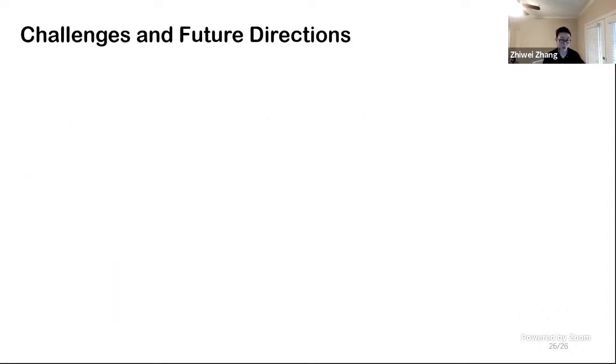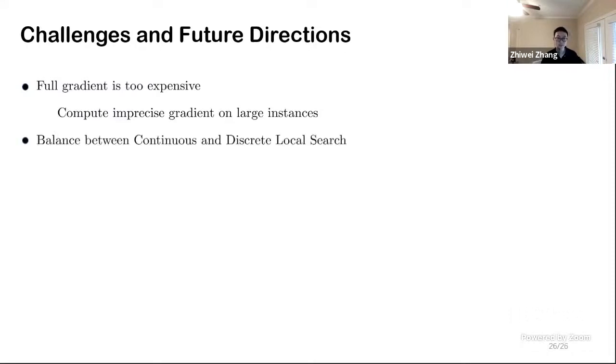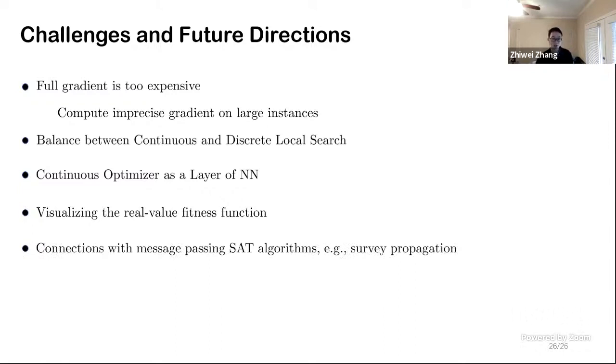As for challenges and the future directions, first of all, the full gradient is really expensive on industrial benchmarks, so we want to compute imprecise gradients. Second, we also want to learn from discrete research to combine that with our framework to design a solver with better performance. Third, since the neural symbolic approach is really popular now, our solver exhibits good potential of being as a layer of neural network as a differentiable optimizer. Also, we want to visualize the real value fitness function to see if we can find any insights of different logical formulas. We also want to connect our algorithm with some random message passing algorithms like survey propagation, and we will dig more into this.